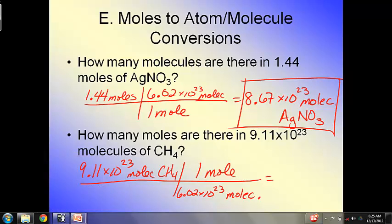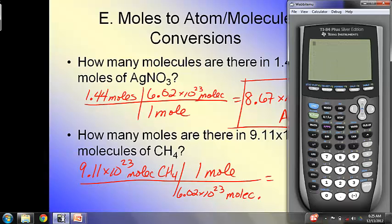Now, this is where I'm telling you that that E function is going to become huge for you. So I'm going to show it to you both ways. I'm going to show it to you the wrong way first. So I'm going to go times 10 to the 23rd. It's underneath, so I have to divide by 6.02 times 10 to the 23rd. And I get 1.51 times 10 to the 46th. Now I'm going to do it the way I'm telling you to do it.